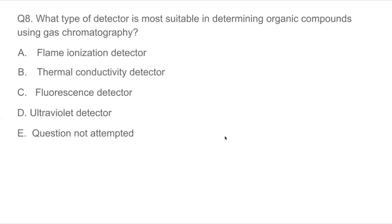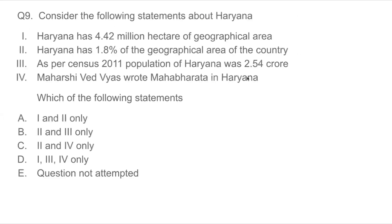Question 9 — because this is about Haryana: Haryana has 4.42 million hectares of geographical area — this is true. Remember, 1 square kilometer equals 100 hectares, so you can convert accordingly. Haryana has 1.8% of the geographical area of the country — this is not true, because Haryana's actual share is around 1.3%, which is less than 1.8%. As per the 2011 census, the population of Haryana was 2.54 crore — this is true. Therefore the answer is D: statements 1, 3, and 4 are correct; statement 2 is not true.